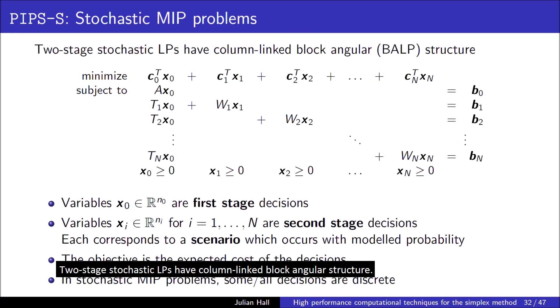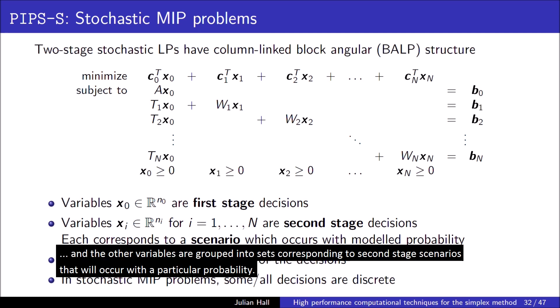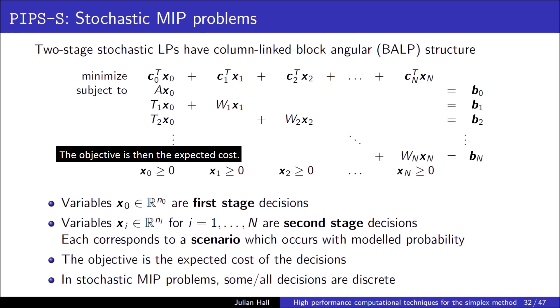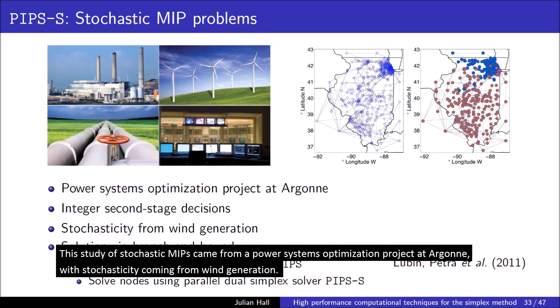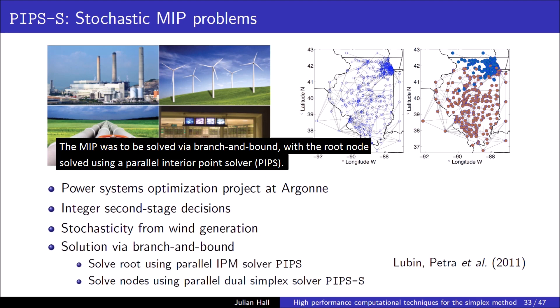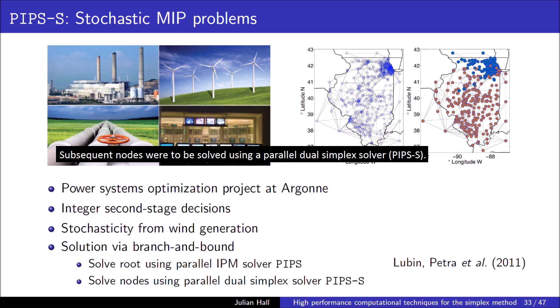Two-stage stochastic LPs have column-linked block-angular structure. One set of variables correspond to first-stage decisions, and the other variables are grouped into sets corresponding to second-stage scenarios that will occur with a particular probability. The objective is the expected cost. In stochastic MIP problems, some or all of the decisions are discrete. This study of stochastic MIPs came from a power systems optimisation project at Argonne, with stochasticity coming from wind generation. The MIP was to be solved via branch and bound, with the root node solved using a parallel interior point solver, PIPS. Subsequent nodes were to be solved using a parallel dual simplex solver, PIPS-S.